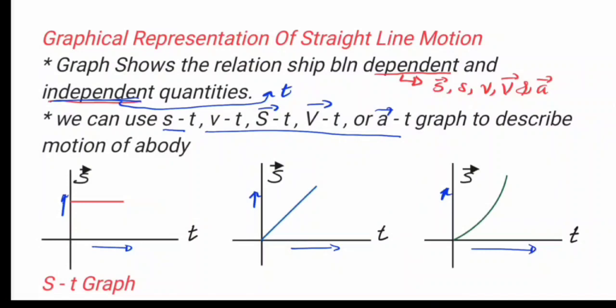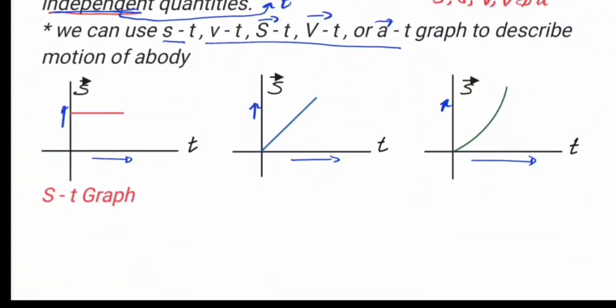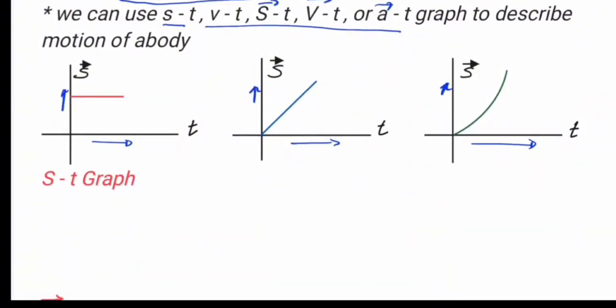We start from an s-t graph. When we say s-t, it can be a displacement versus time graph or a distance versus time graph. We also consider the velocity versus time graph and the acceleration versus time graph. These graphs geometrically describe motion, which is what kinematics is about.